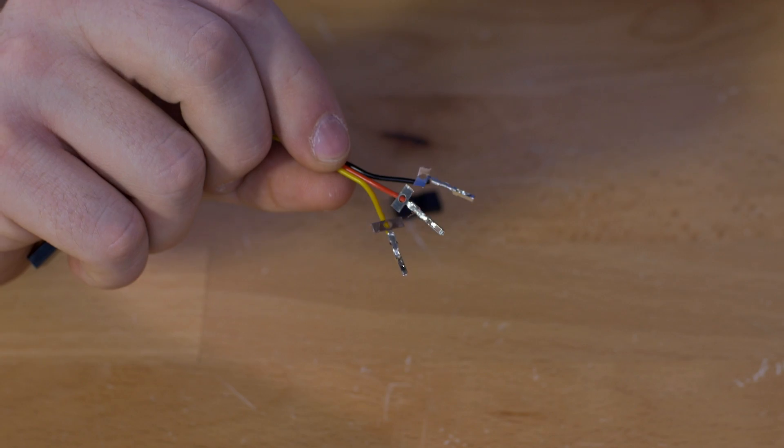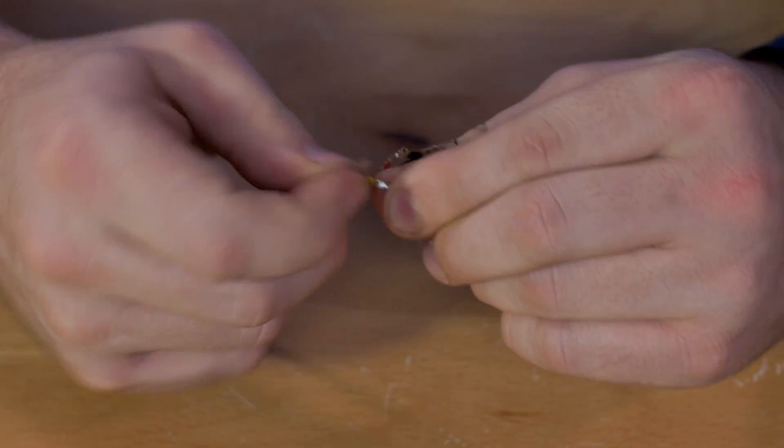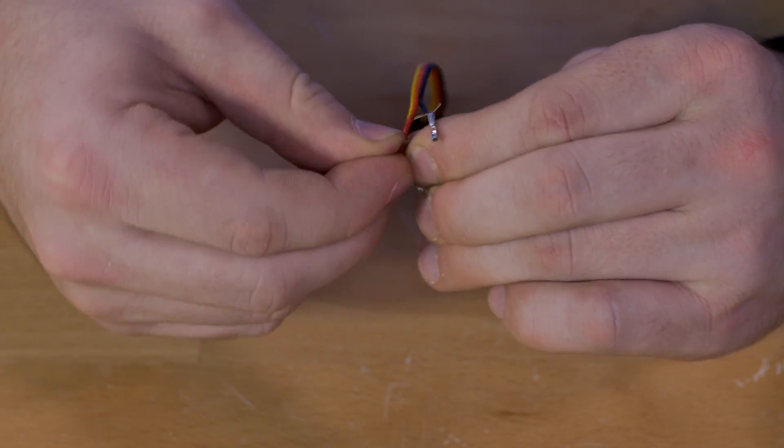Once you've got pins on all three of your wires, go ahead and take off these tabs. You can just bend those back and forth and they'll pop right off. So we'll take that off of all three of our wires.